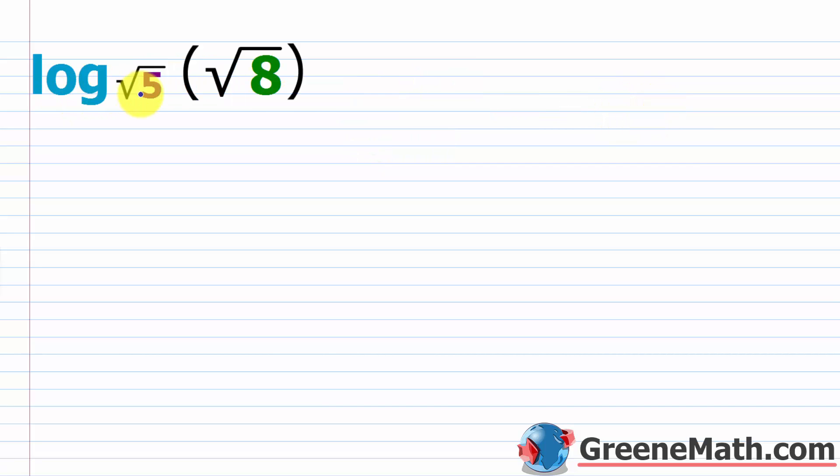Let's look at another one. So we have log base square root of 5 of square root of 8. So all I'm going to do, and this looks kind of hard, but it's really the same thing. You just punch it into a calculator. And I'm going to use the natural logarithm. So I'm going to go the natural log of, again, this argument here, so square root of 8. And then over, you're going to have the natural log of square root of 5. So all you need to do is hit the ln key square root of 8 divided by ln key square root of 5. And you're going to get approximately 1.292.